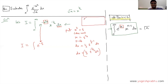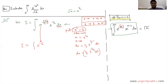We also have to change the limits. The limits of x were from 0 to infinity, so we need equivalent limits for t. Using the relation x cubed equals t: when x equals 0, t equals 0; and when x equals infinity, infinity cubed is infinity, so t equals infinity. Therefore t goes from 0 to infinity.